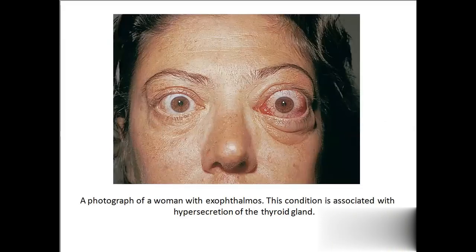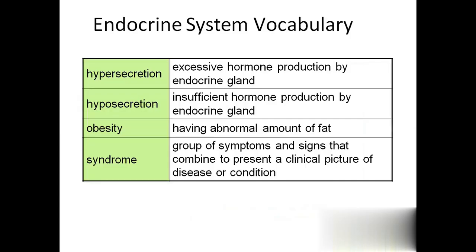Exophthalmos is a sign of hyperthyroidism - hypersecretion of the thyroid gland. Hypersecretion means any gland releases secretion more than normal limits. If any hormone secretion is below the normal limit, we call it hyposecretion. So excessive hormone production by an endocrine gland is hypersecretion, and insufficient hormone production by an endocrine gland is hyposecretion.